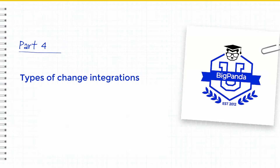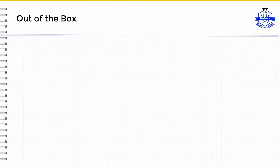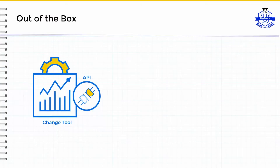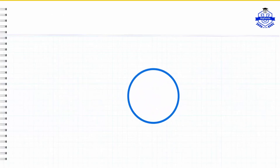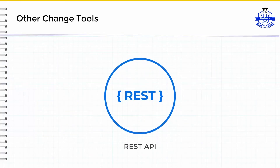In BigPanda, there are two types of integrations. The first is out-of-the-box. Out-of-the-box integrations leverage the respective change tools' built-in ability to push directly over HTTPS, typically through a webhook. BigPanda pre-compiled the receiving endpoints to properly parse and normalize the change payloads, and also vetted the steps required to configure the forwarding of changes. If your change source is supported by one of the out-of-the-box integrations, we recommend you use them to get started quickly. For all other change tools, including homegrown and custom ones, BigPanda's scalable and easy-to-use REST API can also be used.